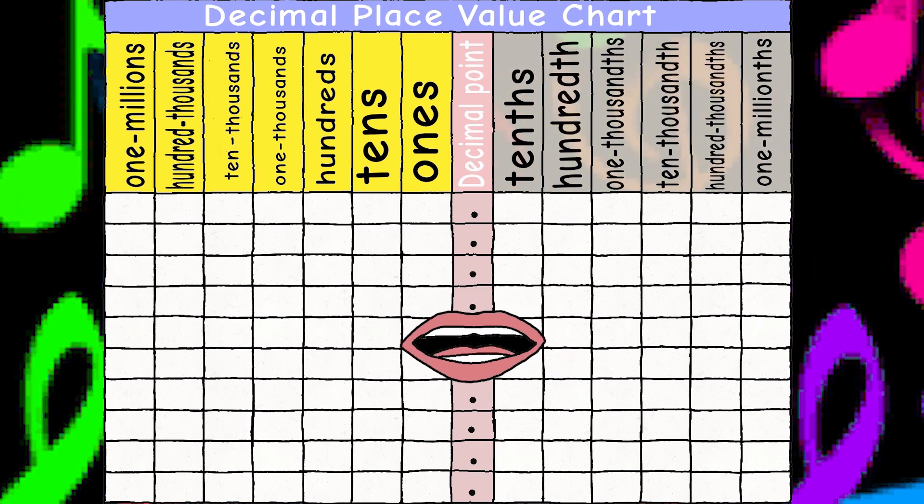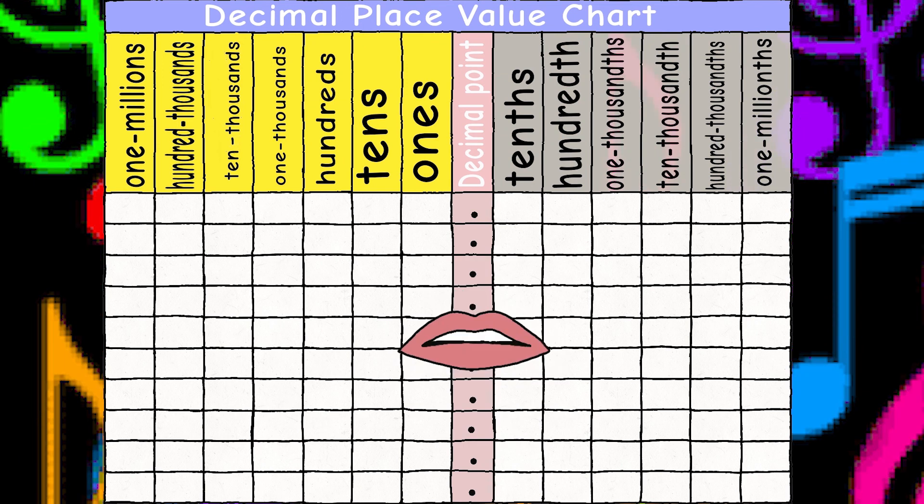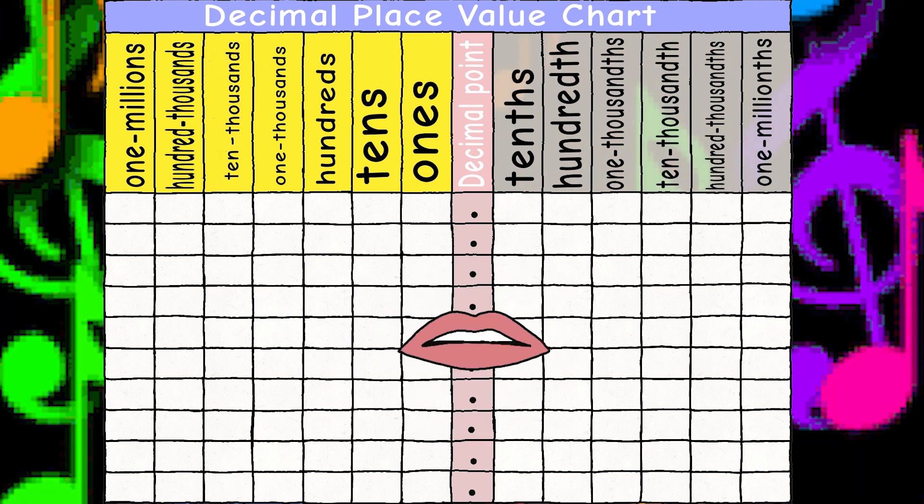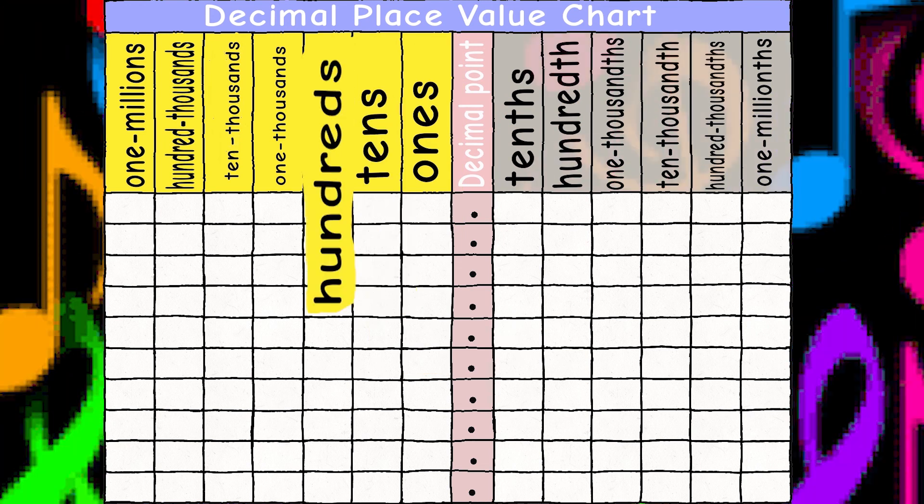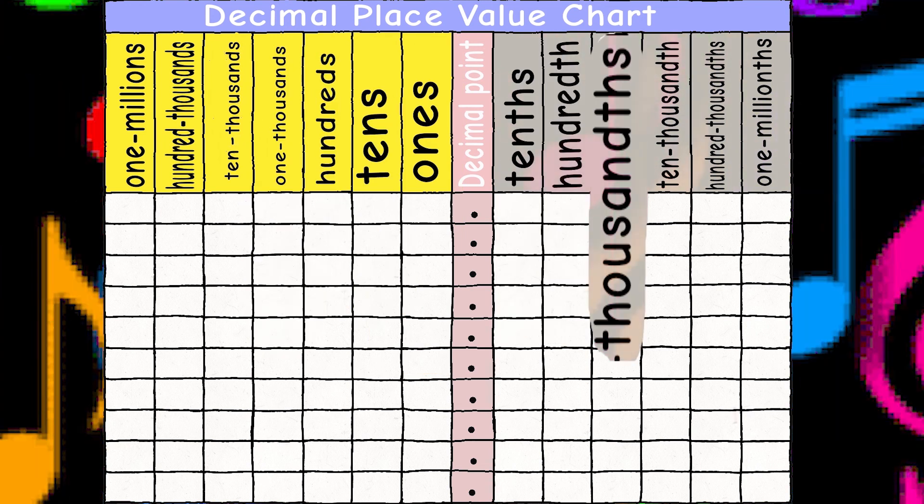Place value, value, value, value, decimal point, decimal point. Place value, value, value, value. Ones, tens, hundreds, thousands. Place value, hundreds, thousands.